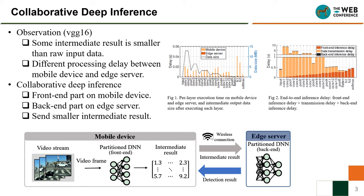The DNN is separated into two parts. The front-end part is on the mobile device, and the back-end part is on the edge server. The raw data is first processed by the front-end part, and the mobile device sends smaller intermediate results to the edge server for further back-end processing. We give an example in Figure 2, and we can see that the partition point at the FC1 layer has optimal end-to-end inference delay.